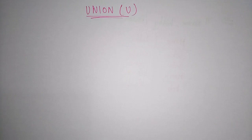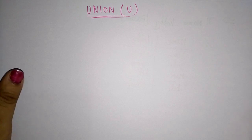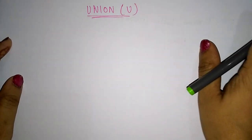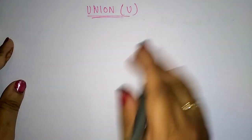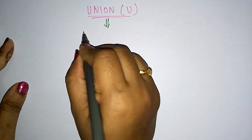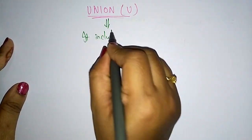Continuing with relational algebra operators, in the previous video I explained about selection and projection. Now let us see the next operator, that is Union. So what is the use of Union?